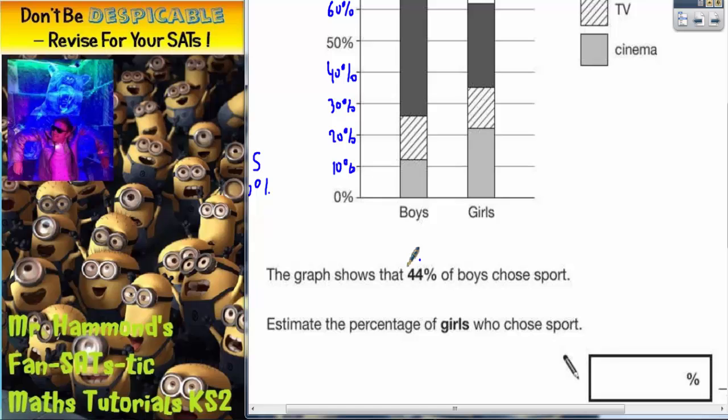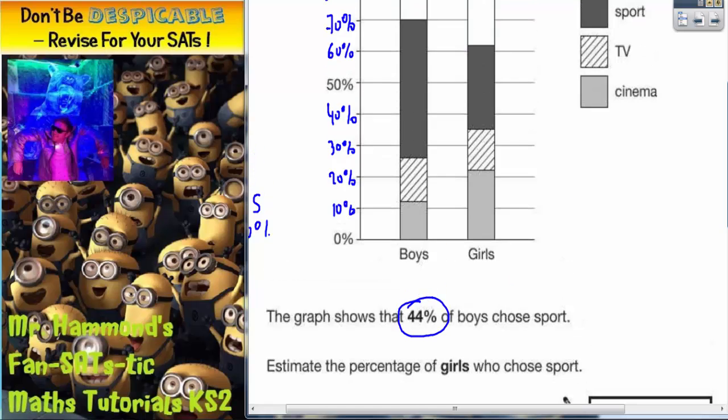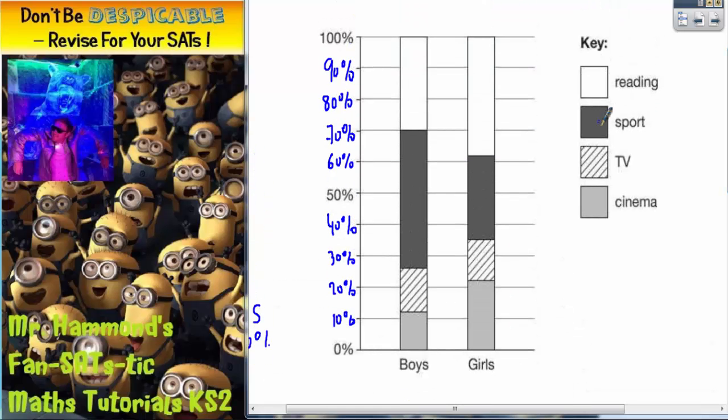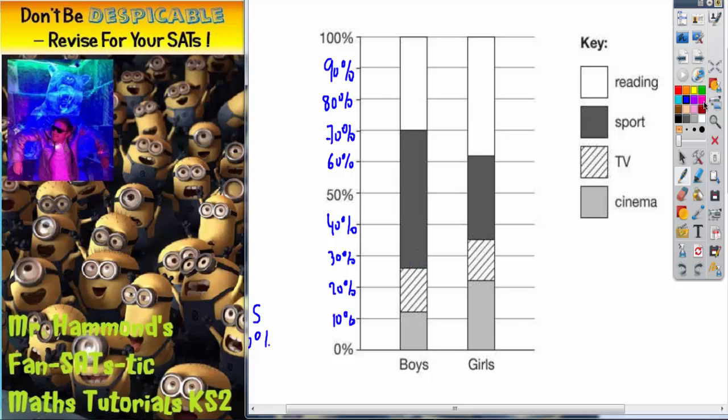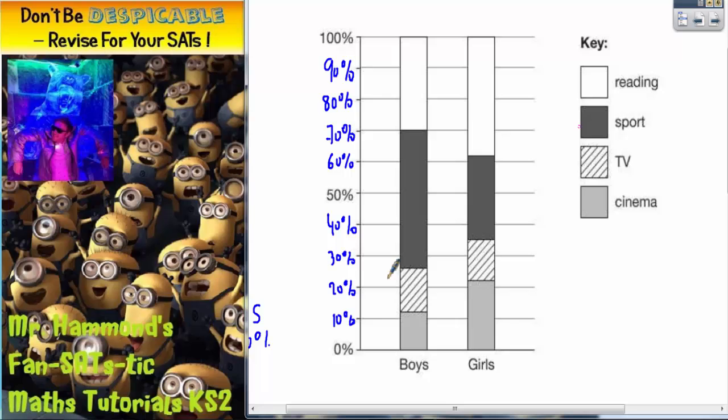Well, let's see where this 44% comes from, first of all. We're talking about sport and we're talking about the boys line. Sport starts on this line here, which is a little bit higher than halfway between 20% and 30%. So, a little bit higher, let's call that 26%.